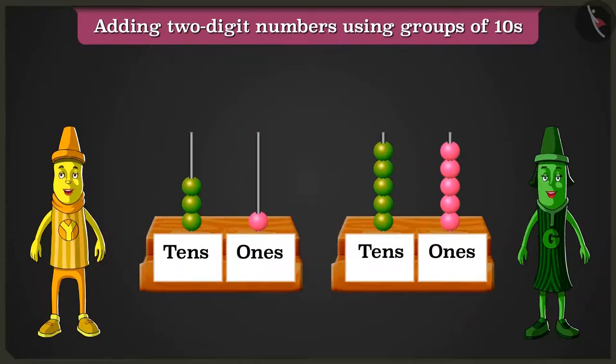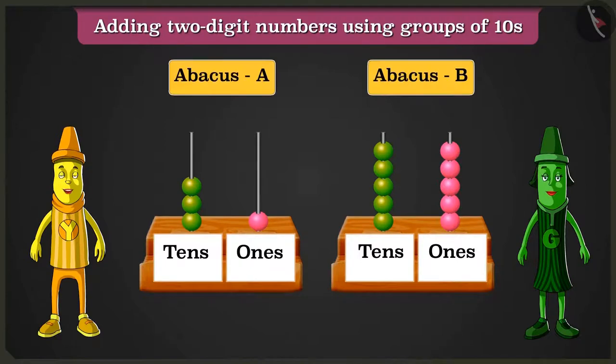Well done, Greeny. Hey, Yellow, what is this? That is an abacus. Let us look at another example.